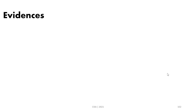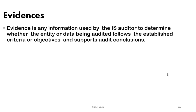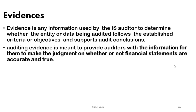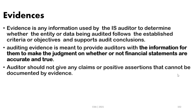Evidence is a very important part of auditing because an auditor cannot formulate any conclusion without sufficient evidence. Evidence is any information used by an IS auditor to determine if the entity or data being audited follows established criteria or objectives, and supports the auditor's conclusions. Auditing evidence provides the information needed to make a judgment on whether financial statements or IS controls are accurate or true. The auditor should not give any assumption or assertion without documented evidence.